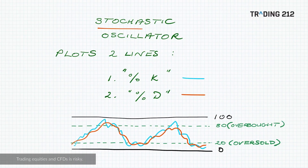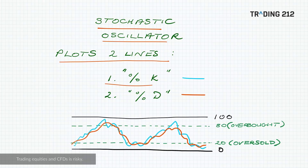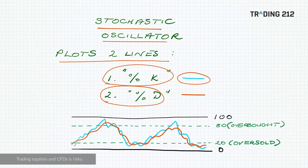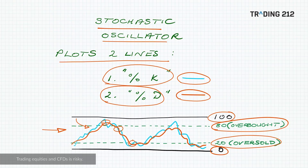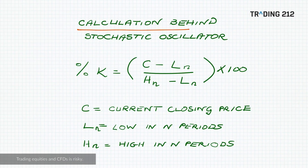Moving on to how the stochastic oscillator actually works: it appears below the main price chart as a separate chart and plots two lines. The first line is called percentage K, which appears as a light blue line in Trading 212's app. The second line is called percentage D, which appears as a red line by default. The oscillator is bounded between 0 and 100, with the default overbought region above 80 and the default oversold region below 20. The two lines closely follow each other and occasionally cross over.